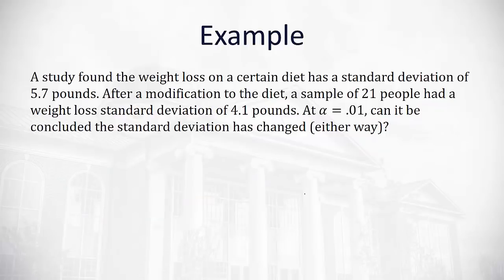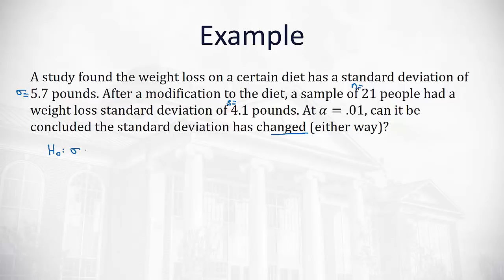Let's do another example. A study finds weight loss on a certain diet has a standard deviation of 5.7 pounds — that's our sigma for the entire population. A modification to the diet is tested with a sample of 21 people (our n), finding a weight loss standard deviation of 4.1 — that's our S. We want to see if the standard deviation has changed, either bigger or smaller. Our null hypothesis is that the variance equals 5.7 squared, which is 32.49. The alternate hypothesis is that the variance is different than 32.49.